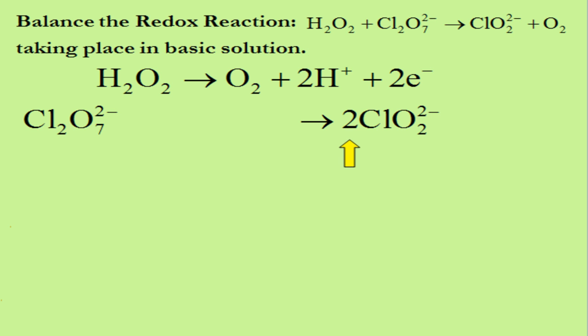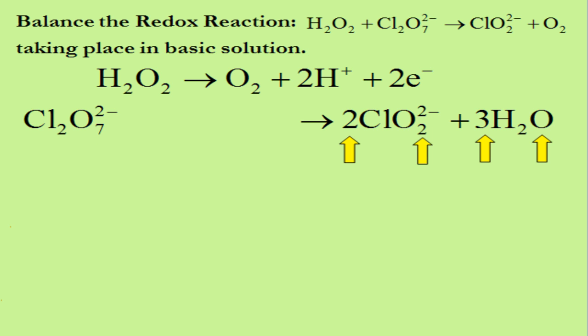The next step is to balance the oxygen atoms. There are seven oxygen atoms on the left side and two times two equals four oxygen atoms on the right side. So we must add three more oxygen atoms to the right side. We do this by adding three H₂O molecules to the right side. The right side now has a total of four plus three, which is seven oxygen atoms, equal to the seven oxygen atoms on the left side.